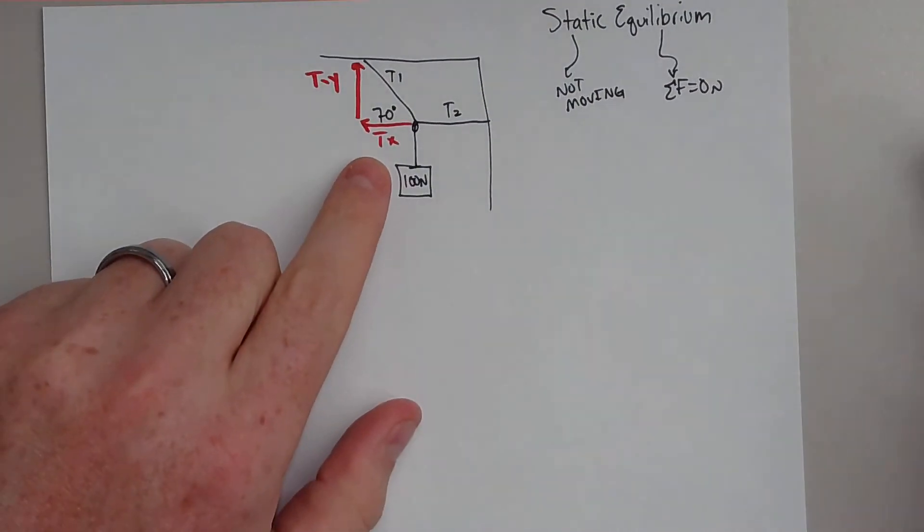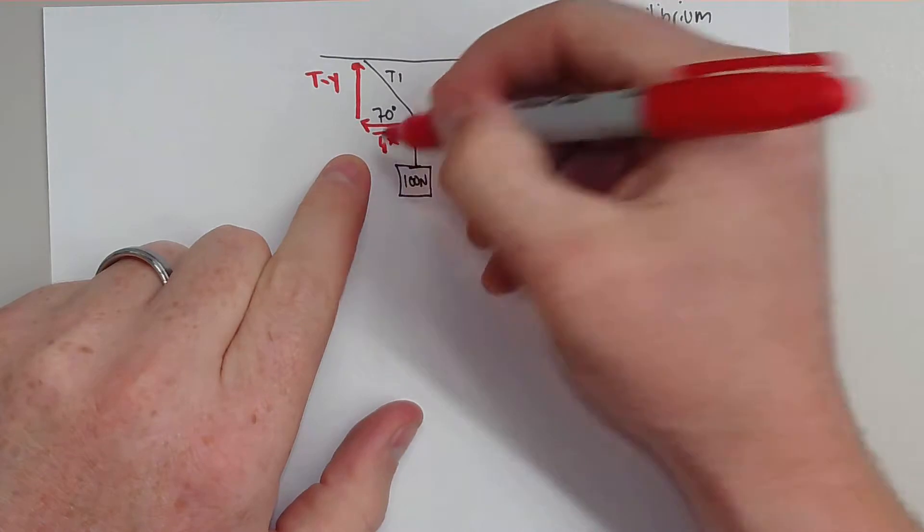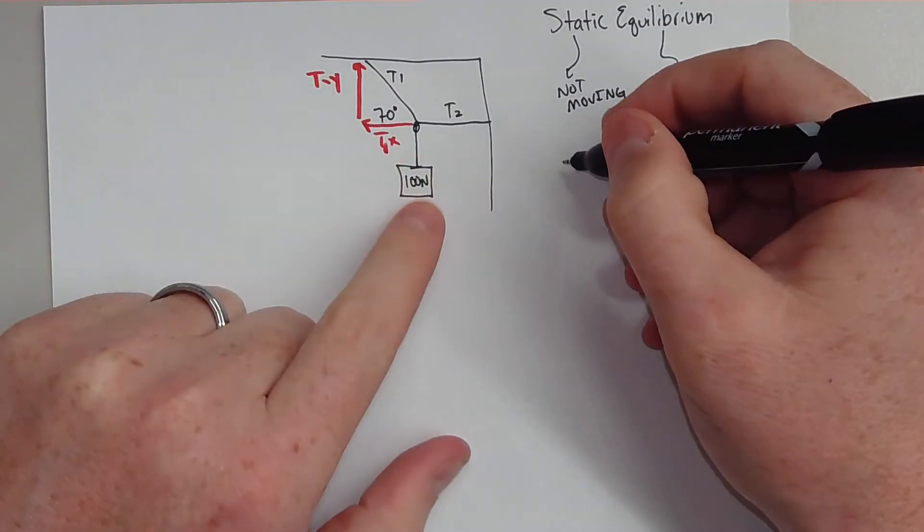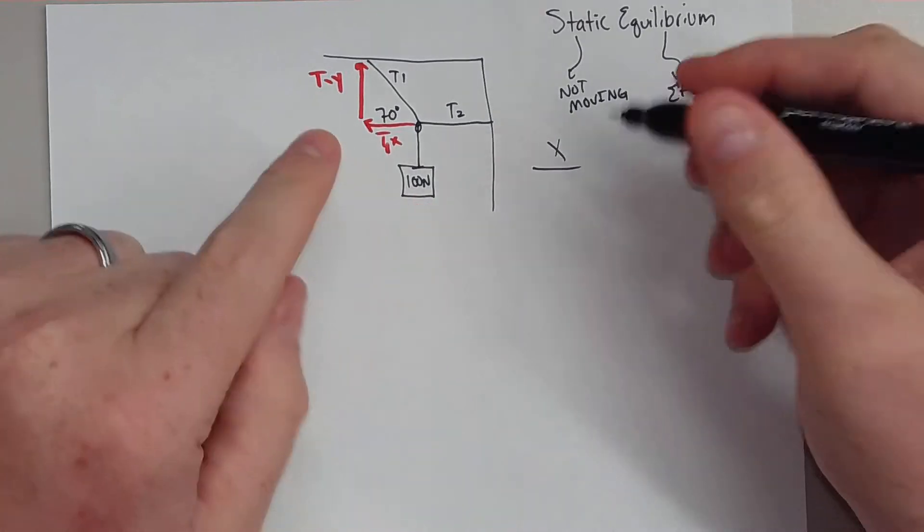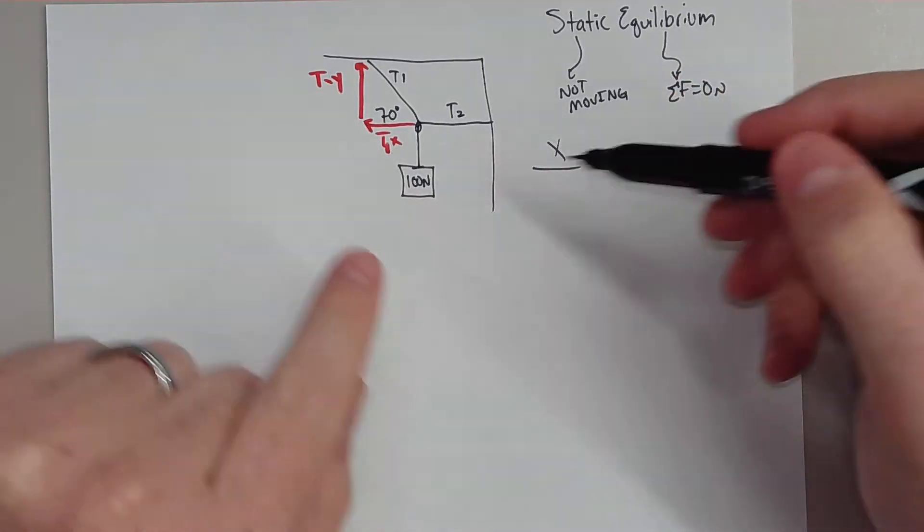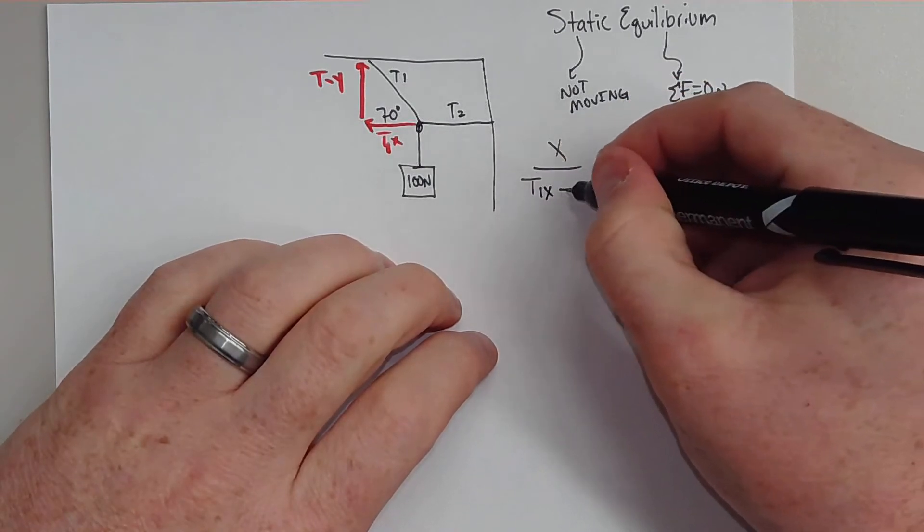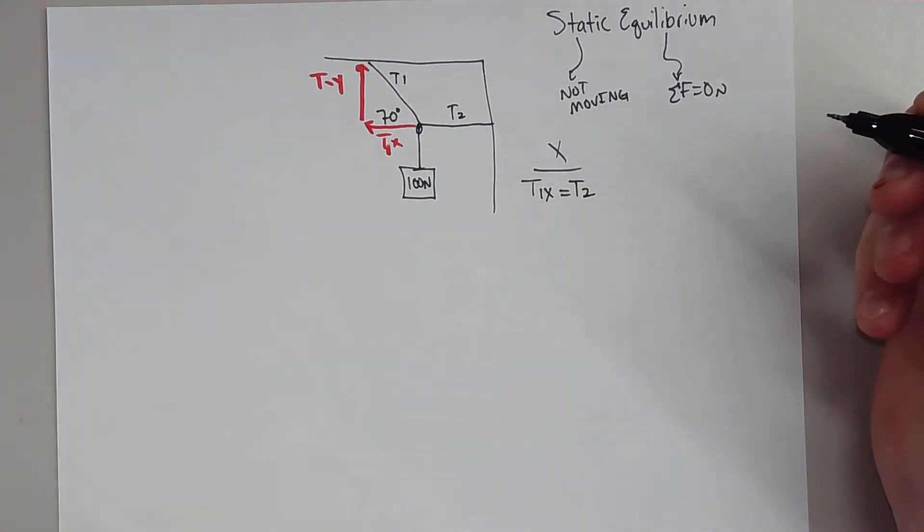If you notice here, T1 does have a T1X component, and it also has a T1Y component. Now, what's interesting is this T1X component has to be equal to T2, because in the X direction, when we're at equilibrium, the object can't be swinging side to side, and it can't be moving up and down.